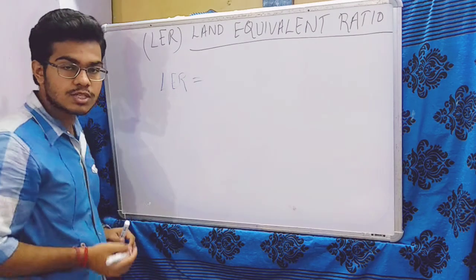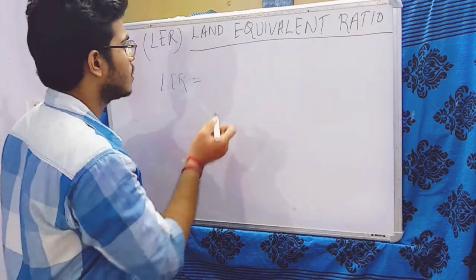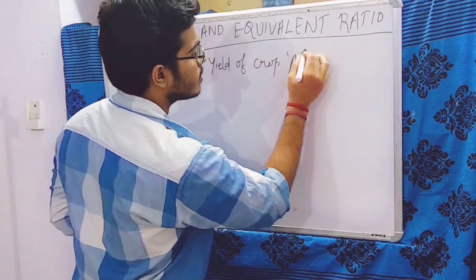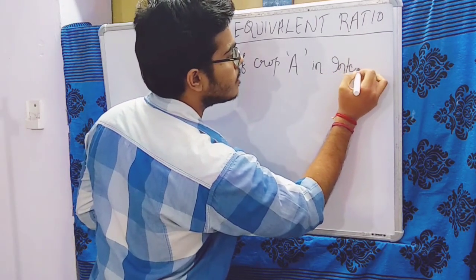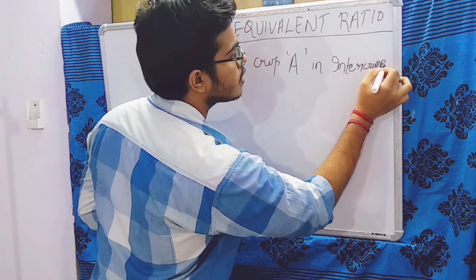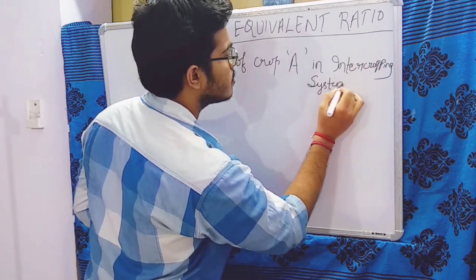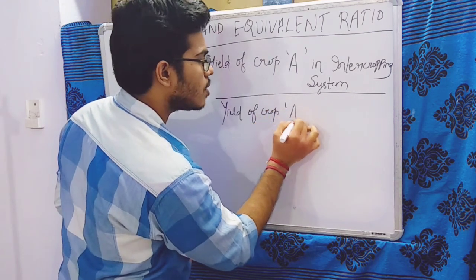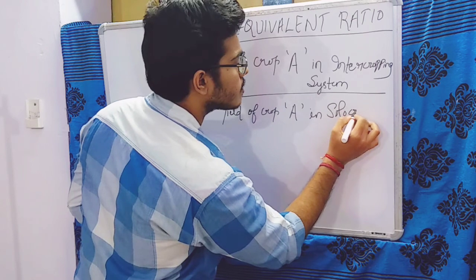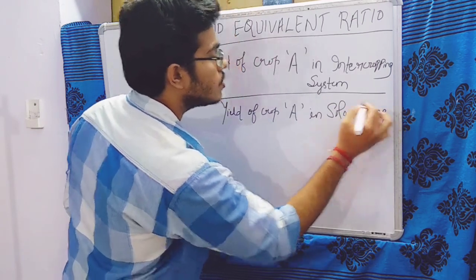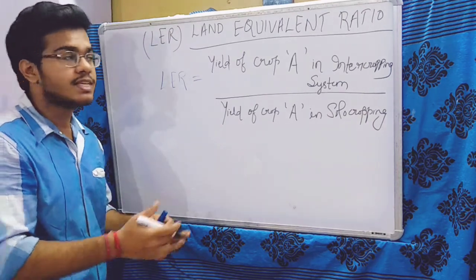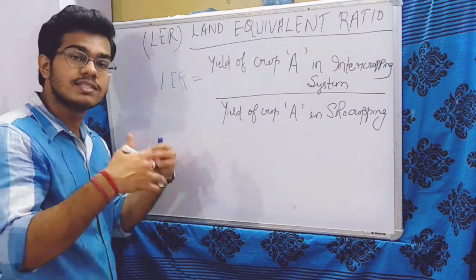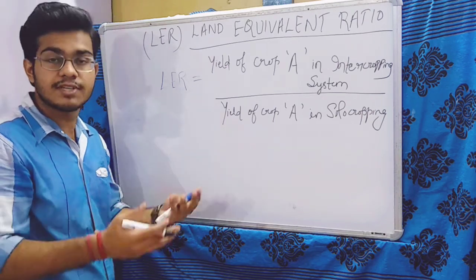LER equals to the yield of Crop A in intercropping system divided by the yield of the same Crop A in sole cropping. We have to compare the yields — what is the yield of a certain crop. Here we have taken Crop A, and we compare what is the yield difference, what is the efficiency — is this intercropping system more efficient or not?